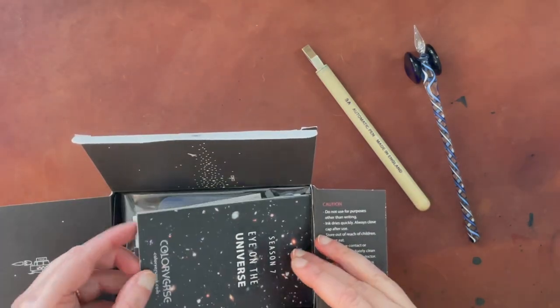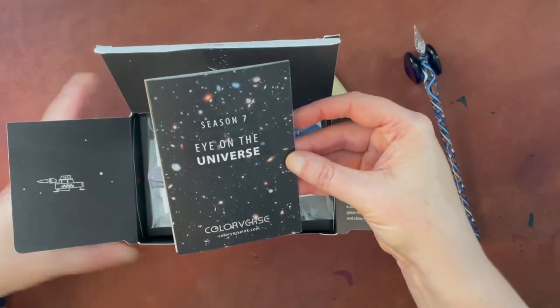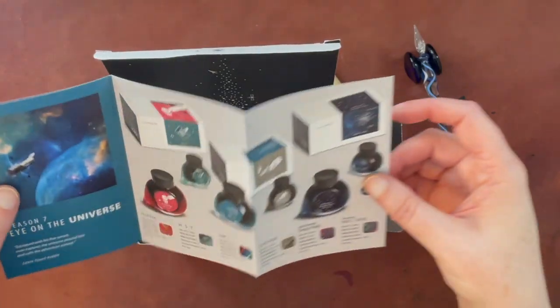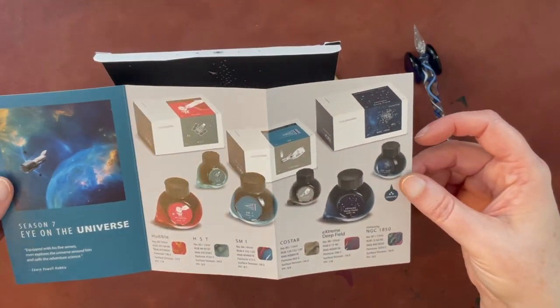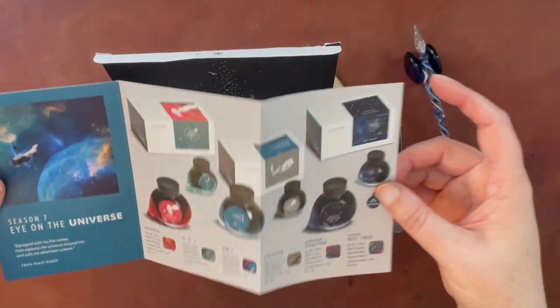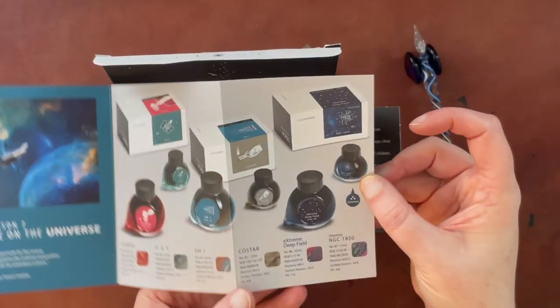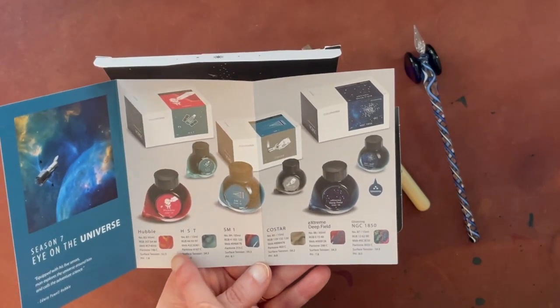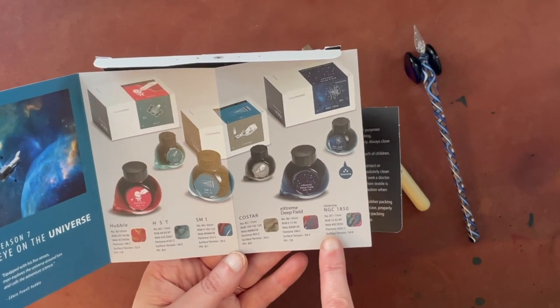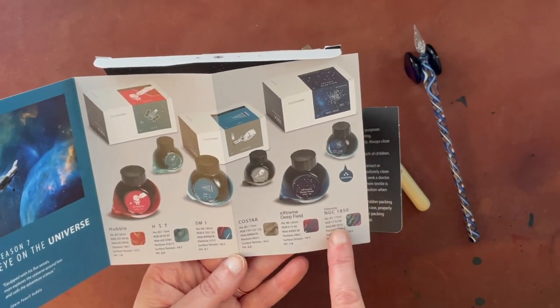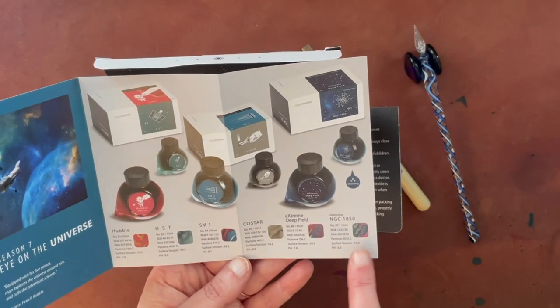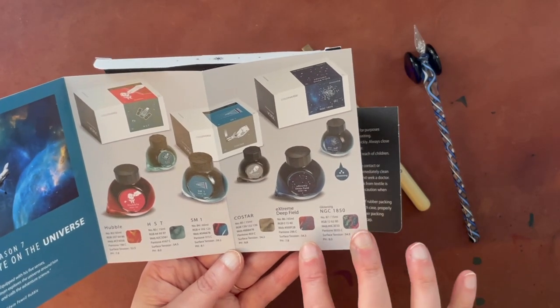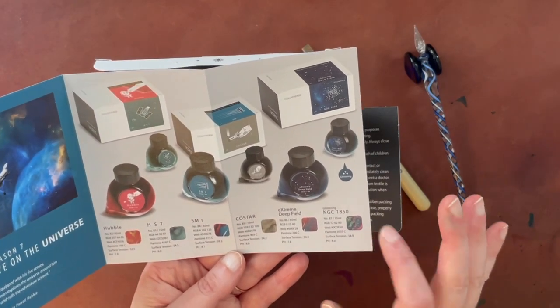And then inside we have all these little space themed things here. And then we have this little booklet on Eyes of the Universe Season 7. I think this is all stuff from the Hubble telescope, images from the Hubble telescope. These are all images from that. And here this shows you some of the other collections here.